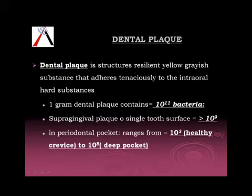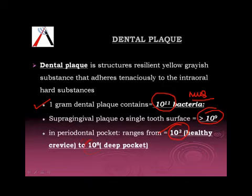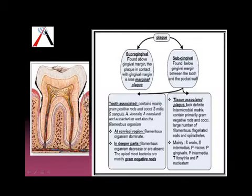Next we come to dental plaque. What is dental plaque? It is a yellow-grey substance that adheres to the tooth tenaciously. The main component of dental plaque is bacteria. One gram of dental plaque contains approximately 10 to the power 11 bacteria. Supragingival plaque on a single tooth has more than 10 to the power 9, and in a pocket we have 10 to the power 3 to 10 to the power 8 bacteria.